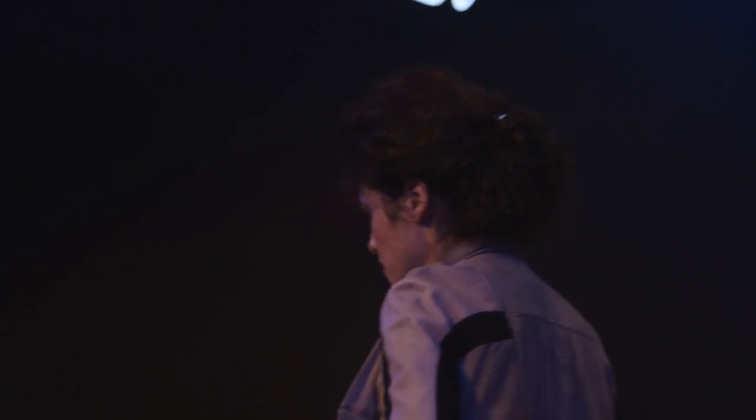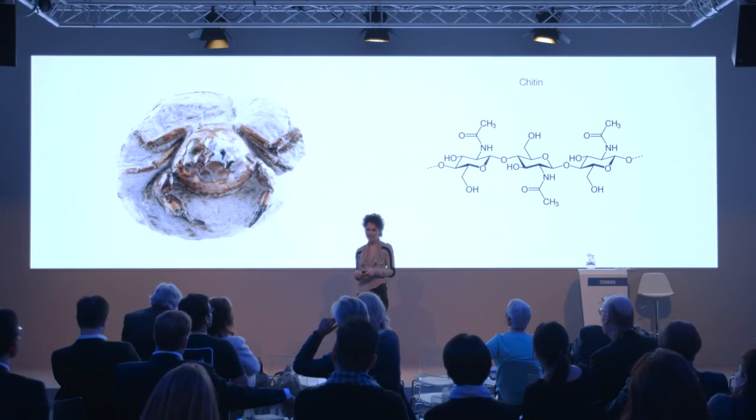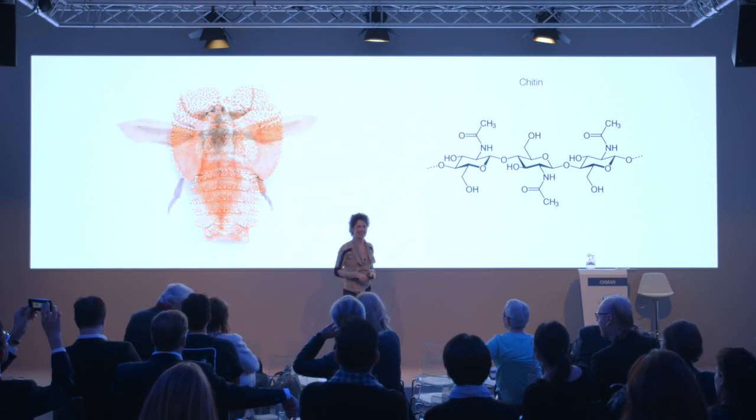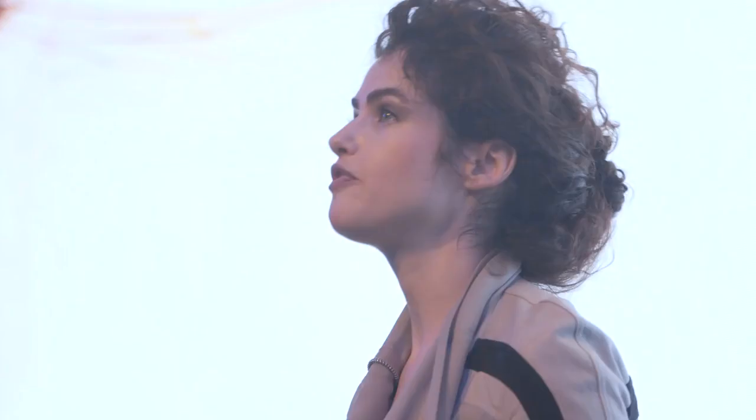But additive manufacturing is today suffering from a material bottleneck — many of the materials we use are still toxic and non-environmentally friendly. To address this, we've started looking into biodegradable and biocompatible materials for printing. We specifically focused on chitin — the second most abundant biopolymer on the planet after cellulose — found in crustaceans such as shrimp shells and butterfly wings.